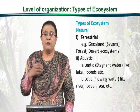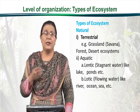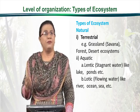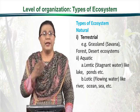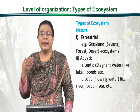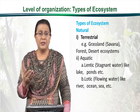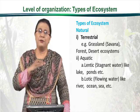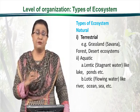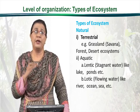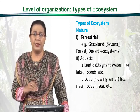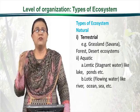Grassland ecosystems provide grasses as a base for the living of other organisms. Forests are also ecosystems and may be of different types, like temperate forests, rainforests, and tundra forests. Every type of forest has a different type of flora and fauna and diverse life forms.